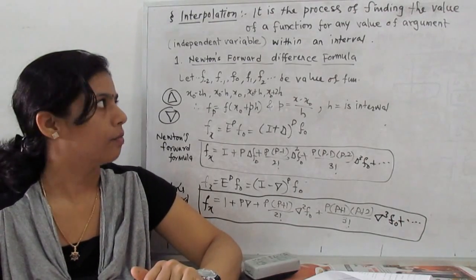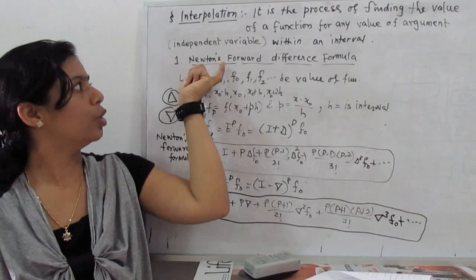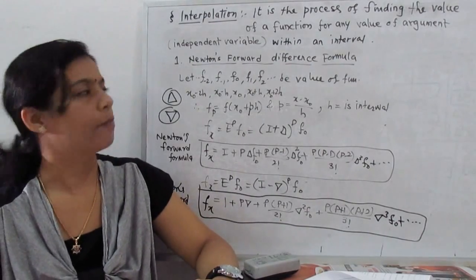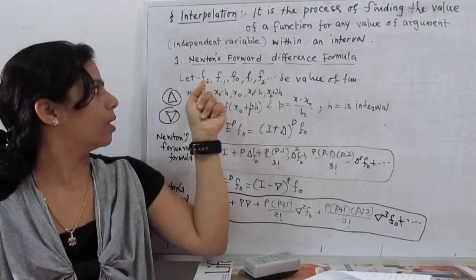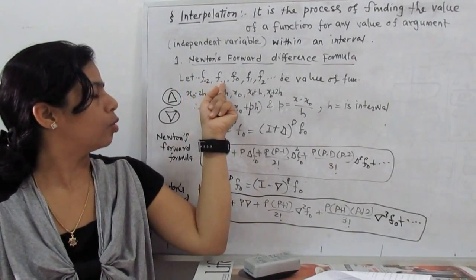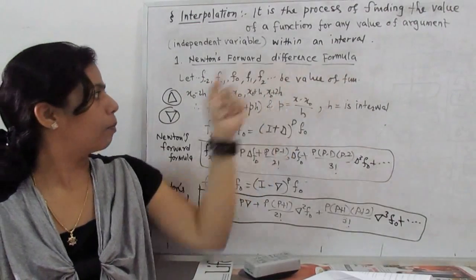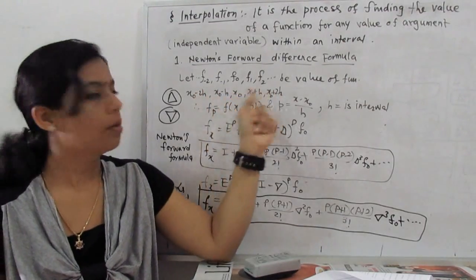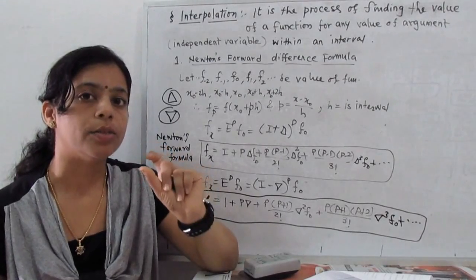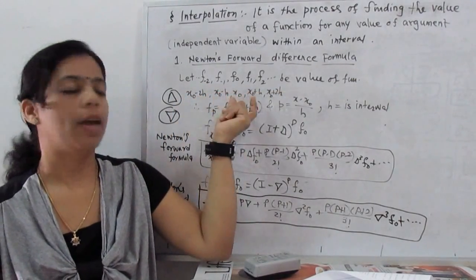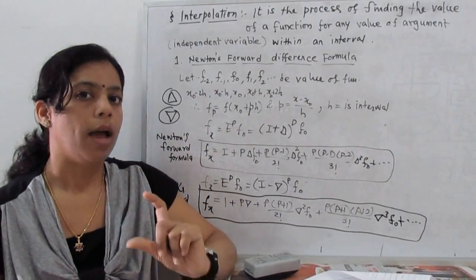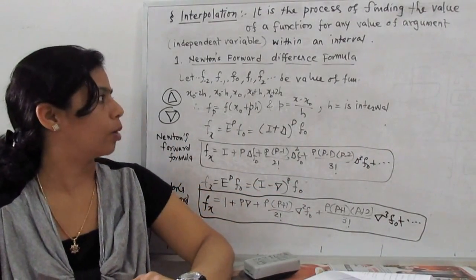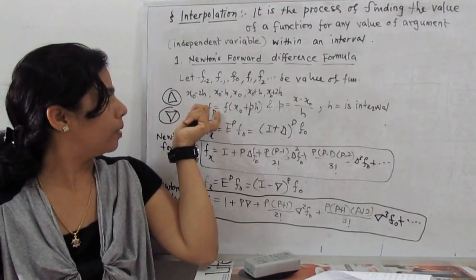With the help of an interpolation table, we can easily find the value of the function — that is the process called interpolation. There are many types of interpolation formulas. We start with the basic Newton forward difference formula and Newton backward difference formula. One important thing: these formulas are applicable only when the interval is fixed. A different interval is not possible with Newton forward formula.